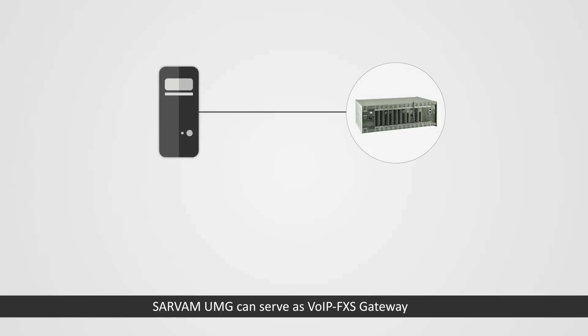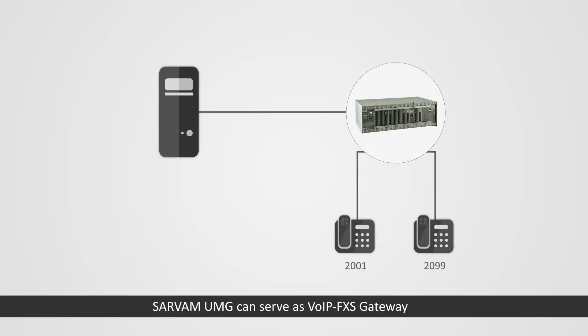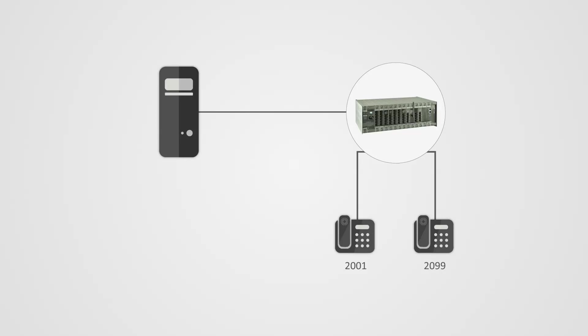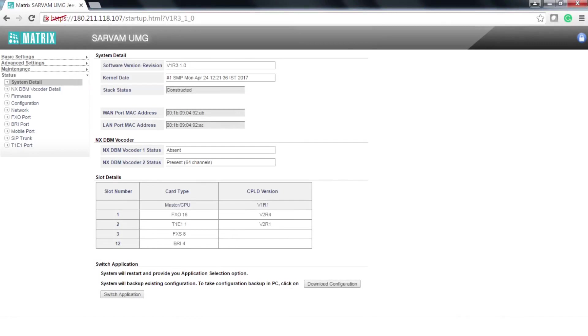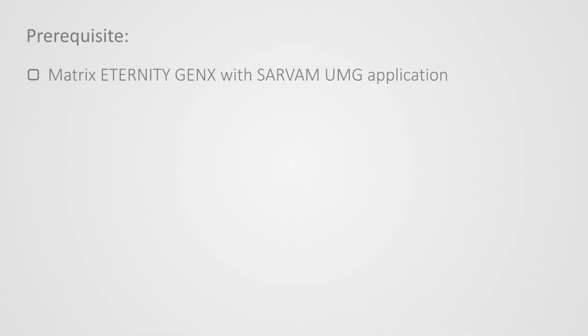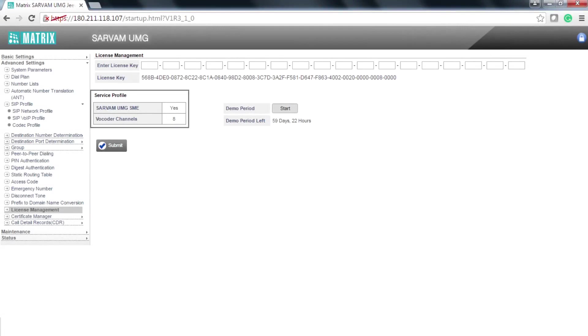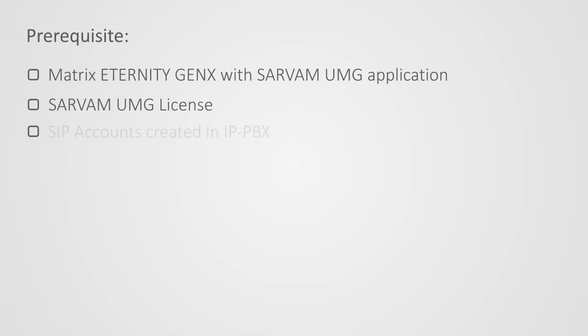Servum UMG can serve as VoIP FXS Gateway for increasing the number of FXS subscribers of an IP PBX. Prerequisites: Matrix Eternity GENX with Servum UMG application, Servum UMG license, and SIP accounts created in IP PBX.